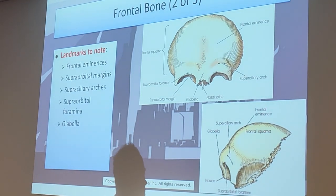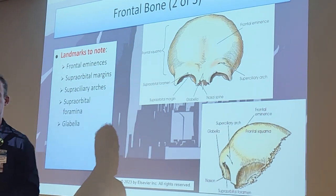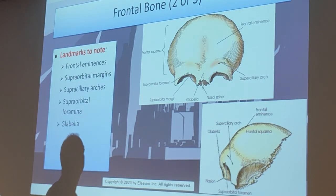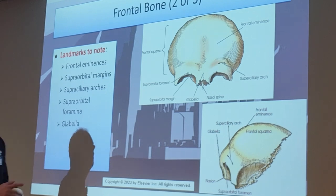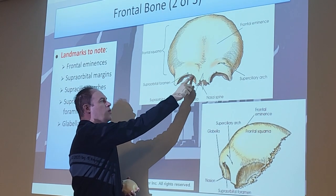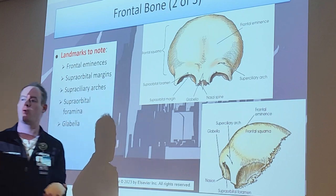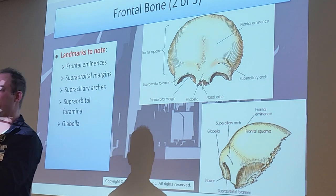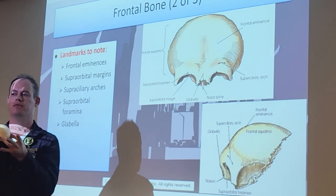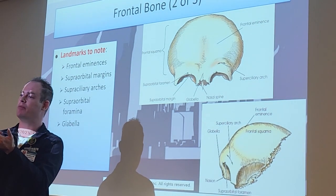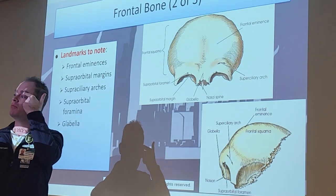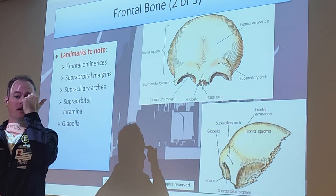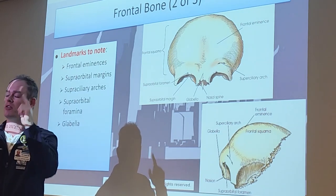The supraorbital margin is the superior border of our orbit. It forms the superior border of the orbit. If you palpate right here above your eye, you'll feel the border of your orbit - just below the eyebrow. That's the supraorbital margin. People make the mistake of confusing it with the supra-ciliary arch.